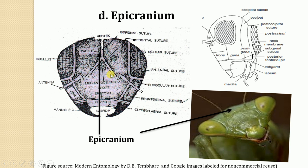The epicranial suture separates the epicranium from the frons. This inverted Y-shaped suture separates the frons from the epicranium. The whole part just above the frontal suture is referred to as the epicranium. It represents the entire upper region of the insect head, extending from the anterior frontal suture to the posterior occipital suture.